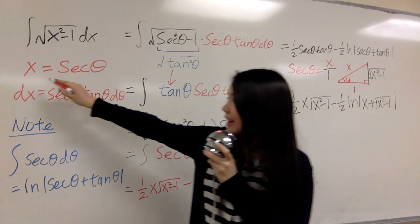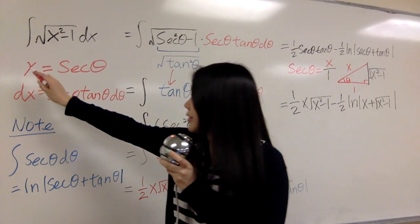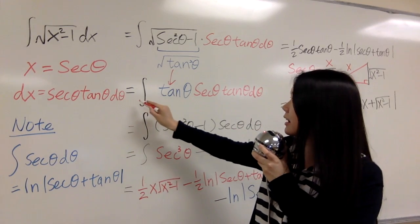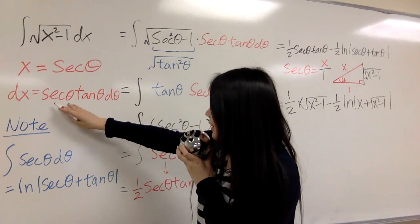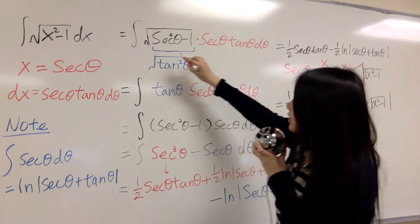First, you set x equals to secant theta, then you derivative both sides: dx equals to secant theta tangent theta dtheta. Then you put secant theta for x and secant theta tangent theta dtheta for dx here.